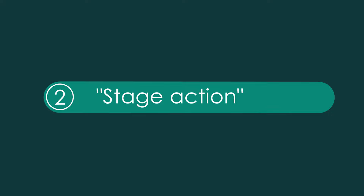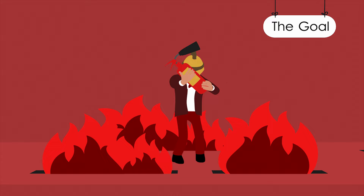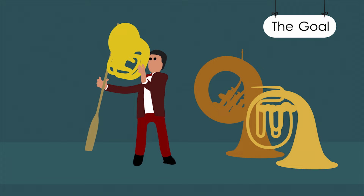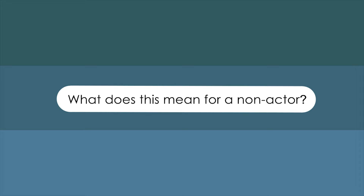The second principle: stage action. Having a goal does not make an actor interesting. It is a struggle for that goal that makes him interesting. And for a struggle, he needs obstacles. Thus, an action according to the method is not a physical movement — it is the struggle.